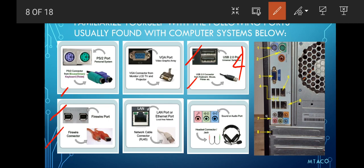Next is your LAN port, also known as your Ethernet port, used to connect a cable for internet. It uses an RJ45 connector. Next is your sound or audio port — you have your microphone port in pink, and your line-in sound port, each with a corresponding connector.